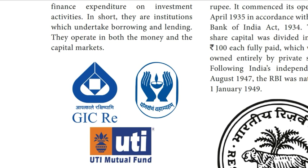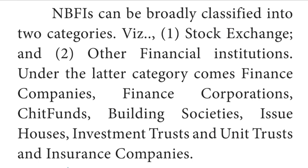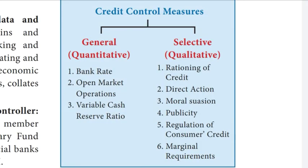NBFIs do not carry on pure banking business but carry on other financial transactions — they receive deposits, give loans, mobilize people's savings, and finance investment activities. They operate in both the money and capital markets. NBFIs are broadly classified into two categories: stock exchanges, and other financial institutions such as finance companies, finance corporations, street funds, building societies, issue houses, investment trusts, unit trusts, and insurance companies. Question number 9: Bring out the methods of credit control. There are two methods: first, general or quantitative credit control — comprising bank rate, open market operations, and variable cash reserve ratio; second, selective or qualitative credit control — comprising rationing of credit, direct action, moral suasion, publicity, regulation of consumer credit, and marginal requirements.